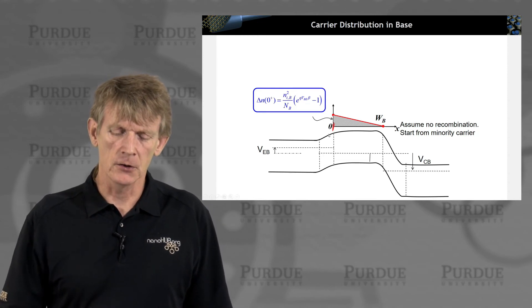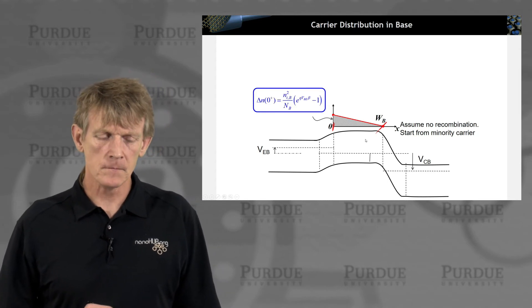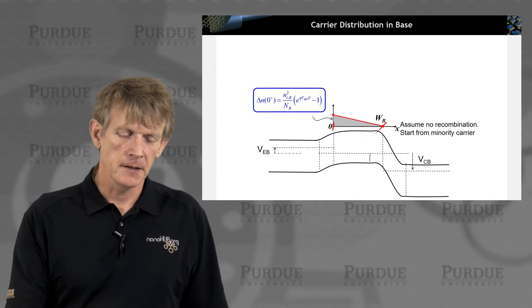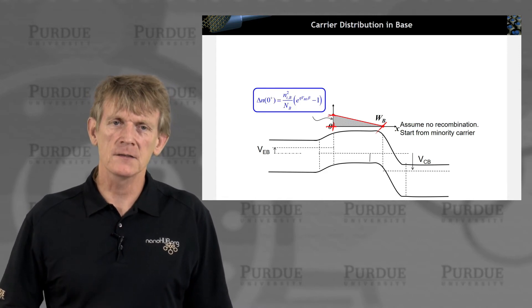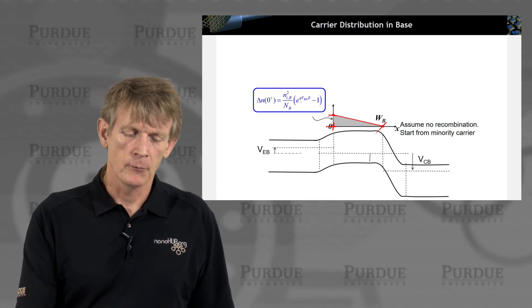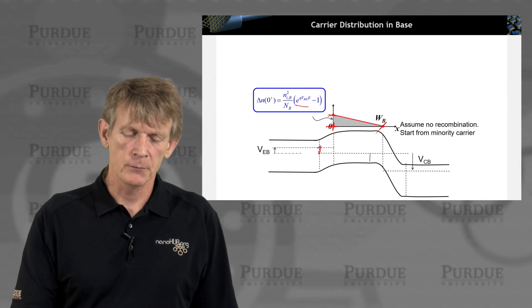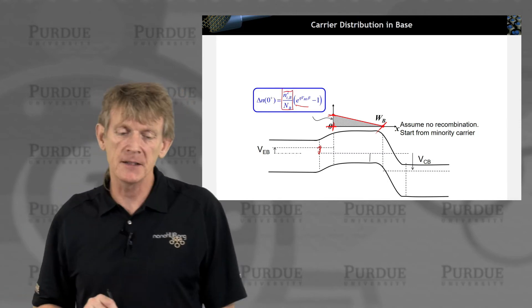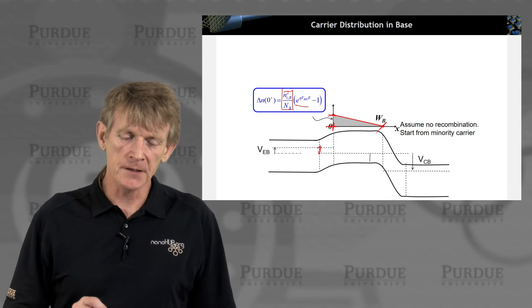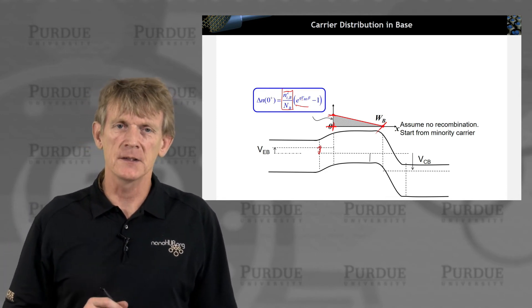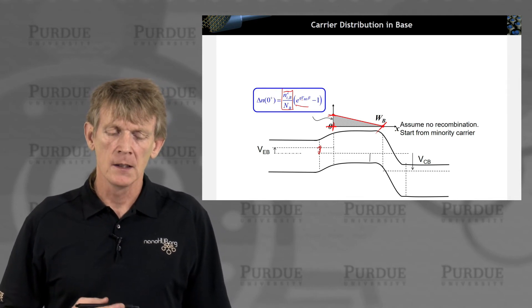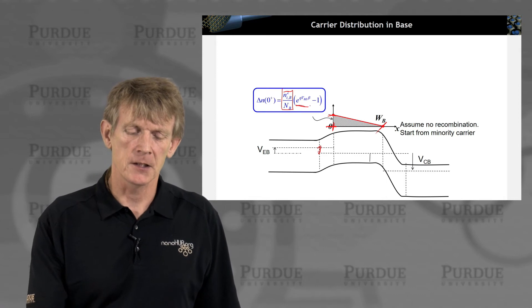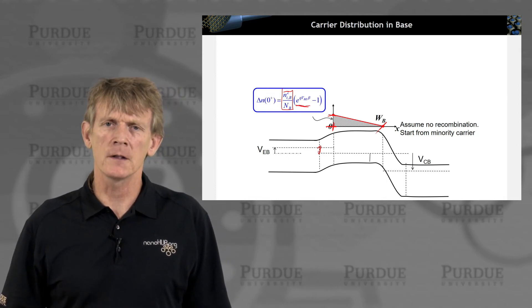Carrying forward like what we have done before, the excess minority carriers that are generated at this junction are proportional to the exponential of the applied voltage between the two Fermi levels. So that's VBE times a coefficient that depends on the base doping. As you increase the positive bias, this term grows exponentially. And if you have this in reverse bias, you have virtually no excess carriers there.